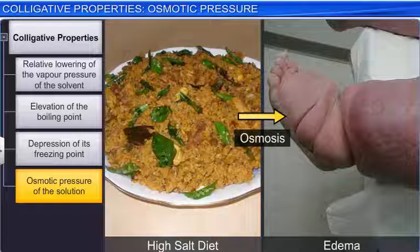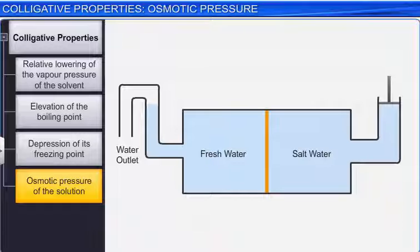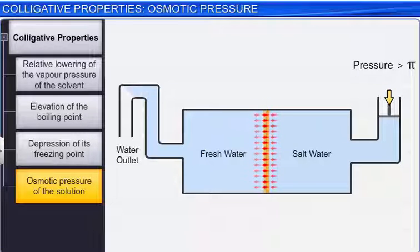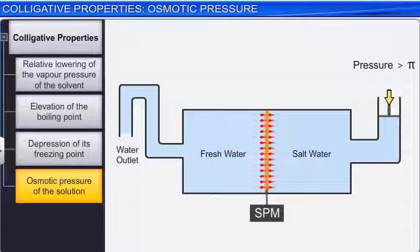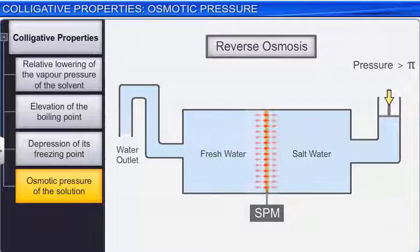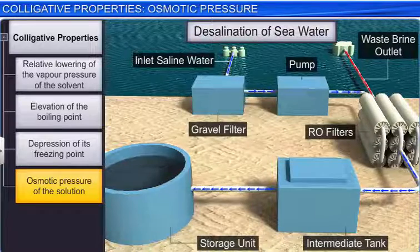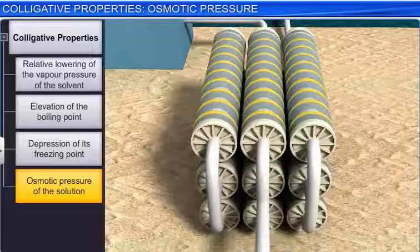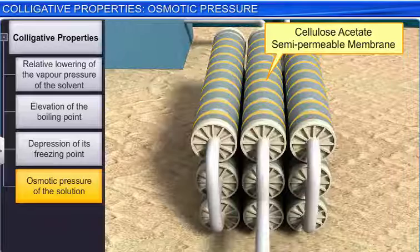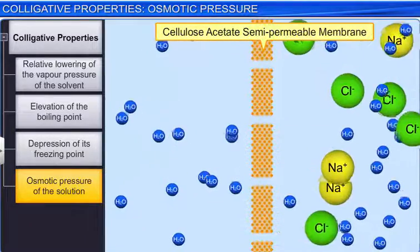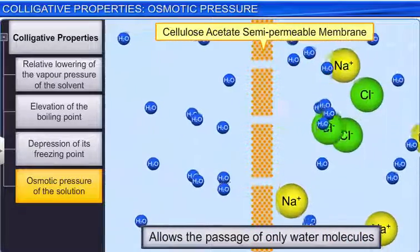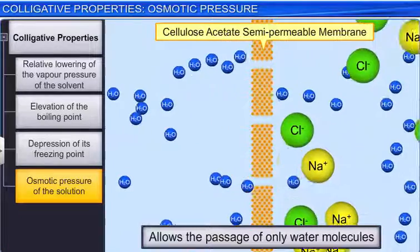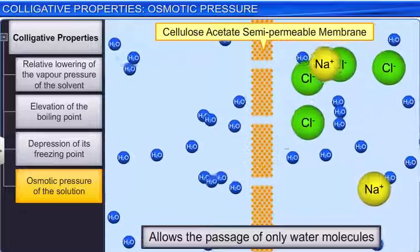If a pressure greater than osmotic pressure is applied on a solution, then the solvent will flow from the solution to the pure solvent through the semi-permeable membrane. This process is known as reverse osmosis, and is often used for the desalination of sea water to get fresh drinking water. Desalination of sea water is carried out using a cellulose acetate semi-permeable membrane placed over a suitable support. This membrane allows the passage of only water molecules, and is impermeable to the salts and other impurities present in sea water, thus making it fit for drinking.